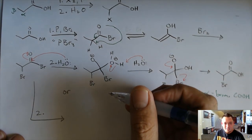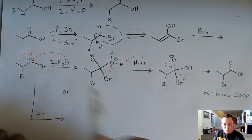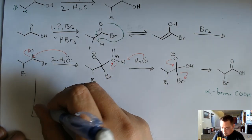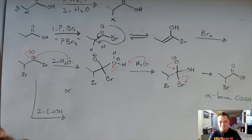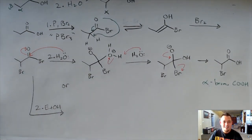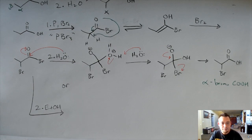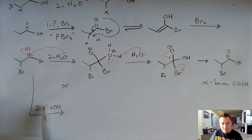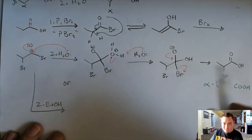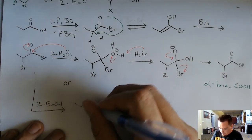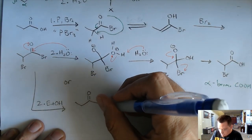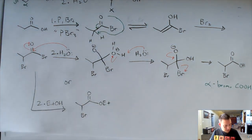Instead of the water quench, you can do an alcohol quench. I'm just going to use ethanol for my example here. Does anybody want to take a guess on what's going to be different with this? That is exactly right — it'll make an ester instead. We saw last time that if you have an acid halide with an alcohol, you get an ester. So that's what happens here. You could practice the mechanism for this on your own — it's kind of the same as what we just did. So we're going to have an OEt there, and then our bromine is still there.